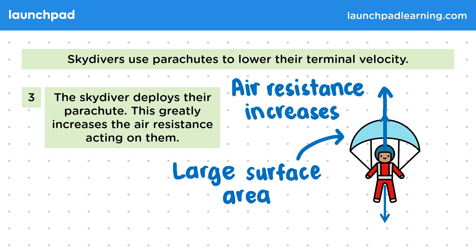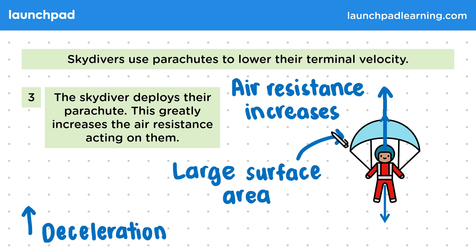Most importantly, the air resistance will now be stronger than the skydiver's weight, so there's an upward resultant force opposing their motion and thus a deceleration. The skydiver has to pick the right moment to deploy their parachute — if they deploy it from too high up, the air won't be dense enough to have the desired effect, and too low down means they won't be able to reduce their speed in time.